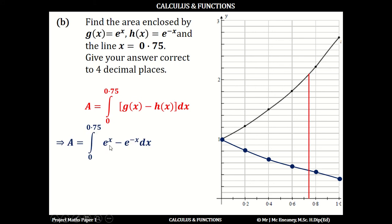If you integrate e^x, that gives e^x. If you integrate -e^(-x), this gives -e^(-x)/-1, and the minuses cancel. So this gives e^x + e^(-x), and the limits go from 0 to 0.75.